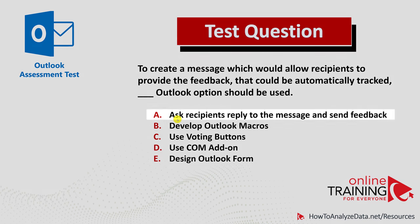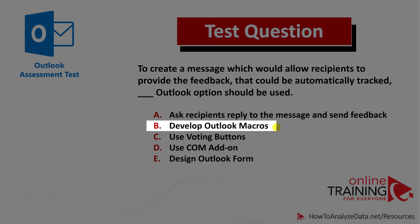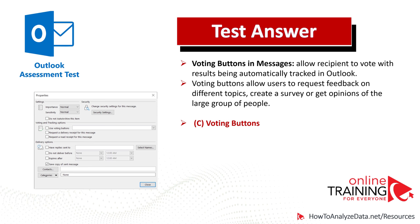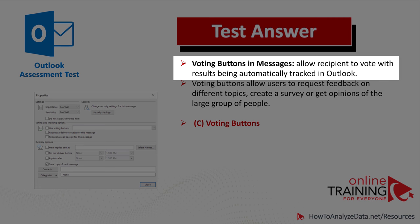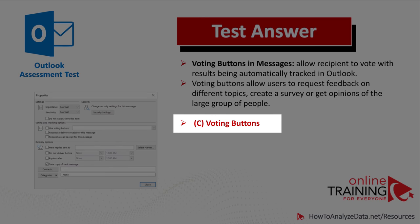If you look at the other choices, they may not be valid. Choice A, asking recipients to reply and send feedback, doesn't meet the criteria. Developing Outlook macros will not allow you to develop functionality that automatically tracks feedback. There is no com-add-on that would meet the functionality criteria. And designing an Outlook form will not allow you to automatically track feedback from recipients. So the correct answer is Choice C, voting buttons.